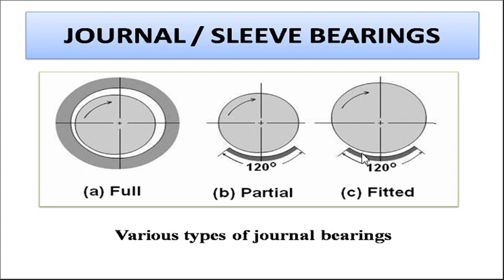The third category is the fitted bearing, where the angle is different compared to the partial bearing. These bearings are simple in construction, easy to supply lubricating oil, and have low frictional loss and low temperature rise compared to partial or fitted type bearings.